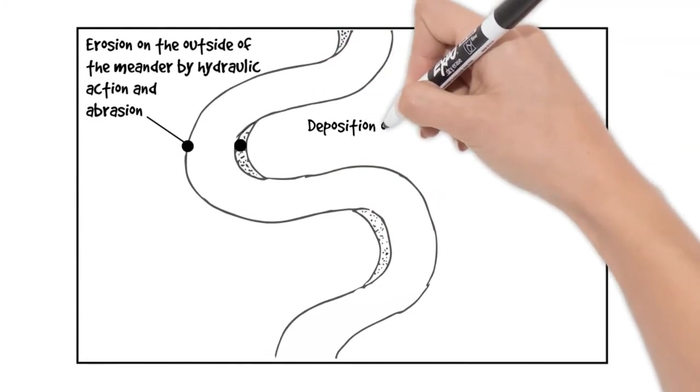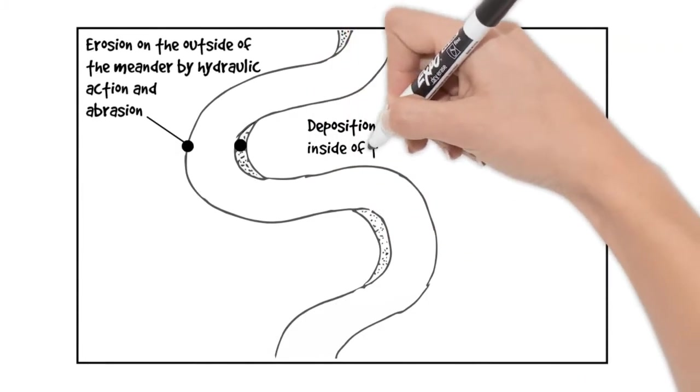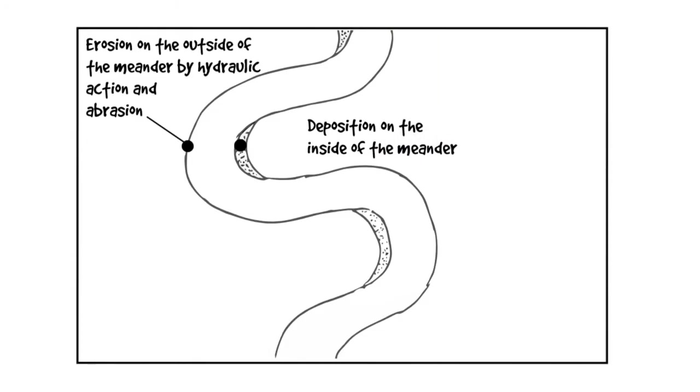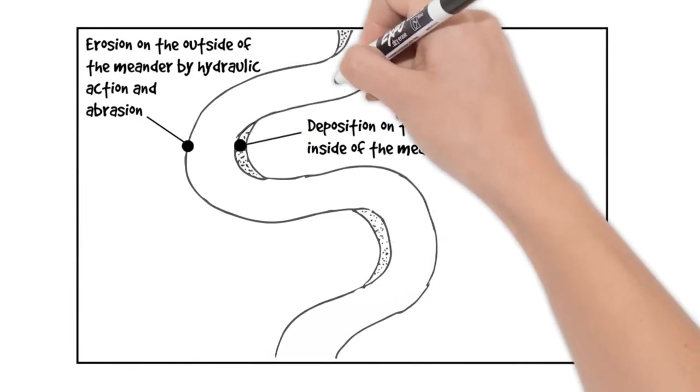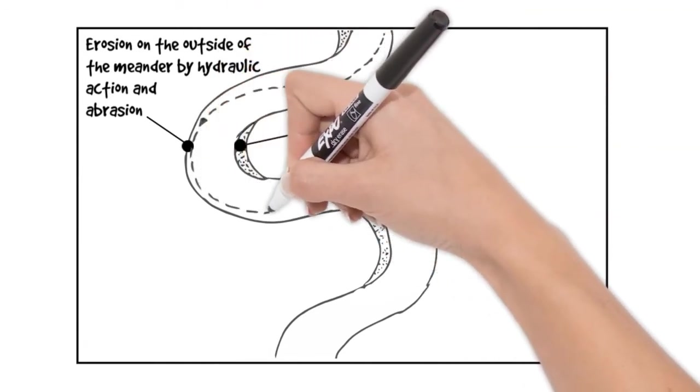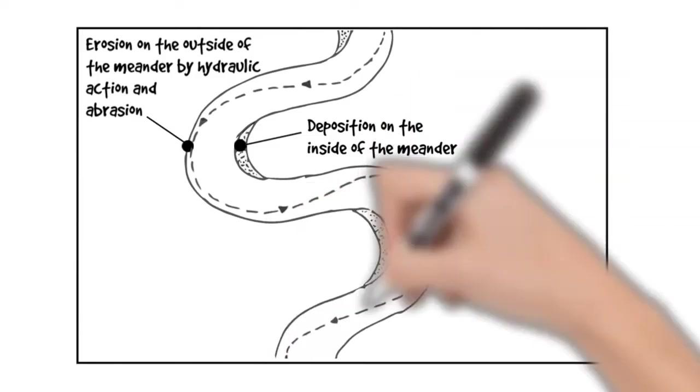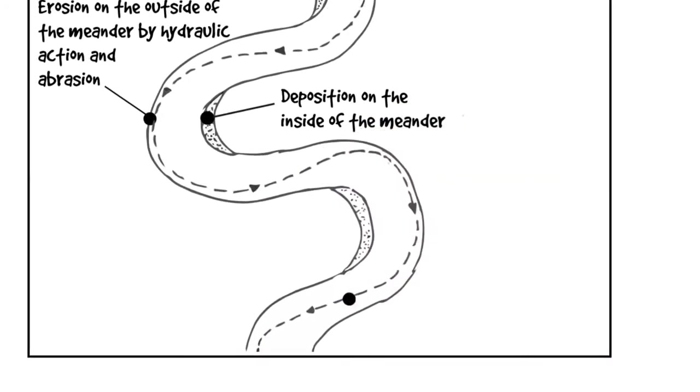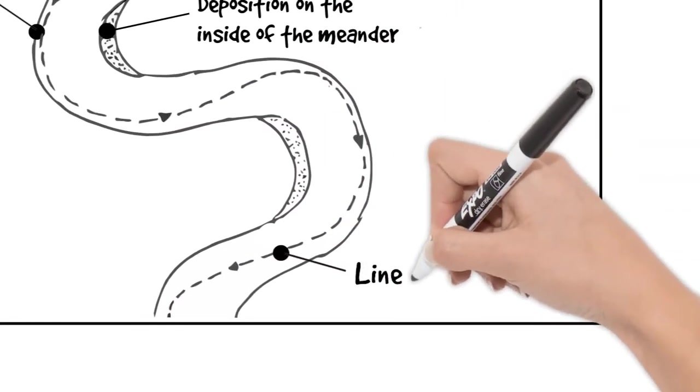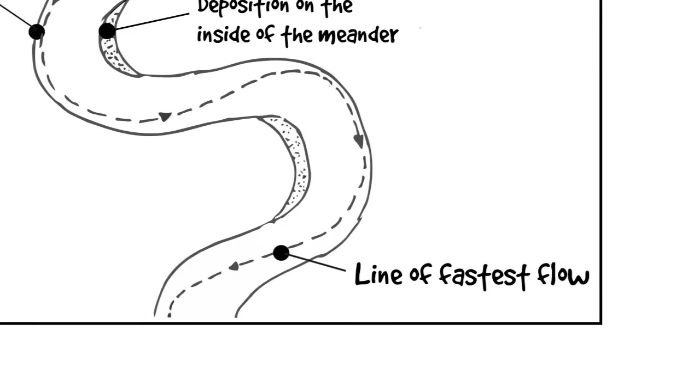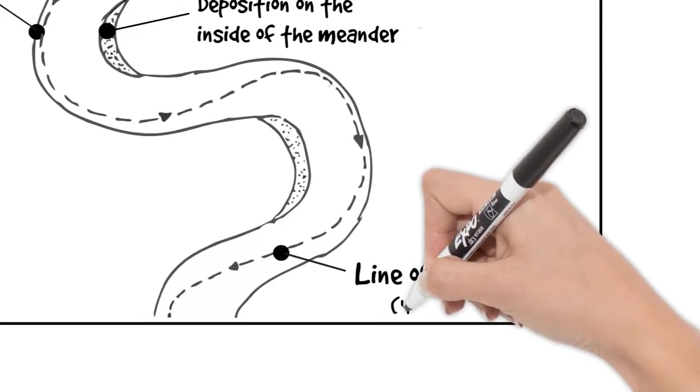On the inside of the meander we're going to label deposition as the river beach. That's where the slip-off slope is. A dotted line drawn carefully down the river will show the fastest flow moving from side to side. This corkscrewing motion is known as helicoidal flow.